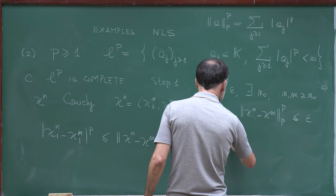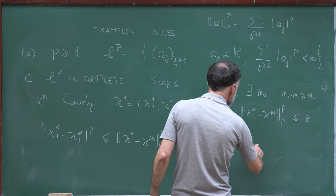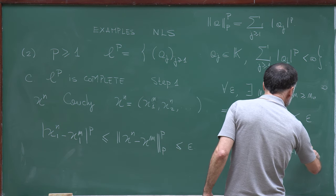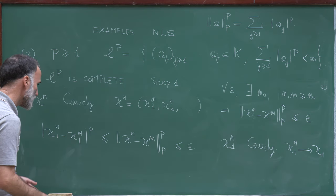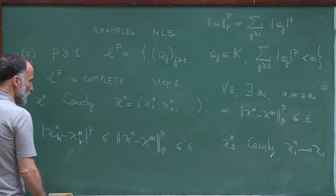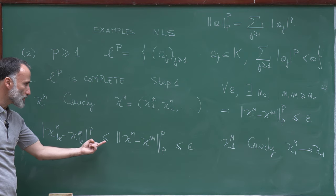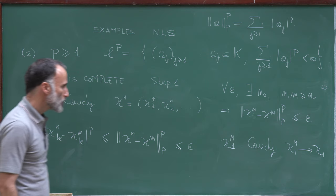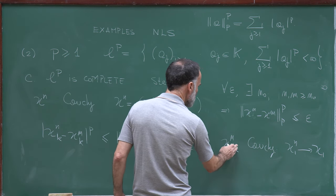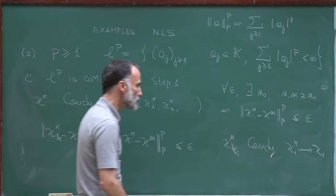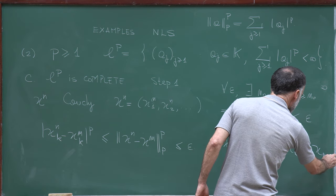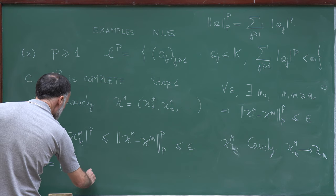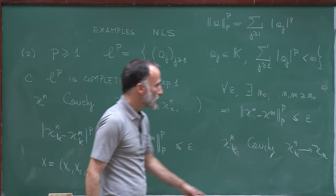So xn₁ converges to some x₁. What I did for coordinate 1 I can repeat for any k: the term |xnk − xmk|^p is bounded by the p-norm to the power p, which is bounded by epsilon for n, m > n₀. Therefore xnk is a Cauchy sequence for each fixed k, and it converges to some xk. Here is my candidate: x is the sequence x₁, x₂, and so on, where xk is the limit of xnk.